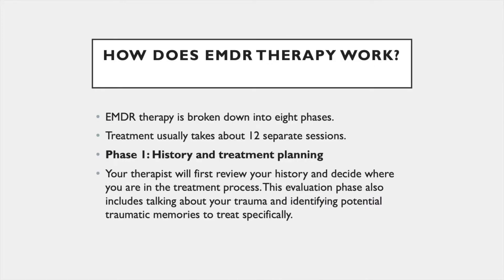EMDR therapy is broken down into eight phases. Treatment usually takes about 12 separate sessions. In Phase 1, history and treatment planning, your therapist will first review your history and decide where you are in the treatment process. This evaluation phase also includes talking about your trauma and identifying potential traumatic memories to treat specifically.